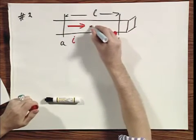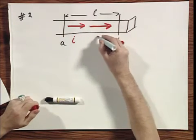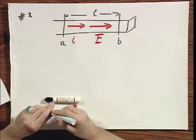And as a result of that, if the wire has a finite resistance, then there is an electric field in the wire.